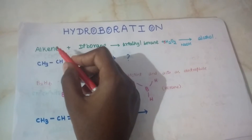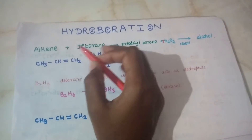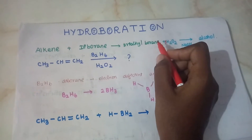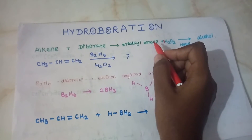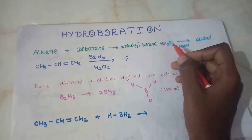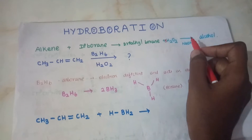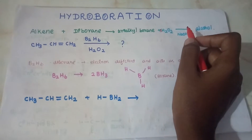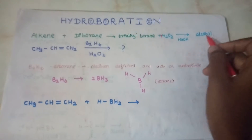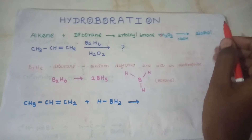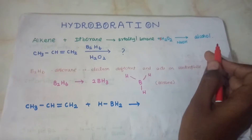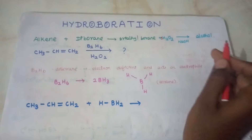The alkene reacts with B2H6, called trialkylborine. We are going to treat it with 3 molecules of H2O2 in the presence of NaOH. We are going to explain hydroboration as a reaction.